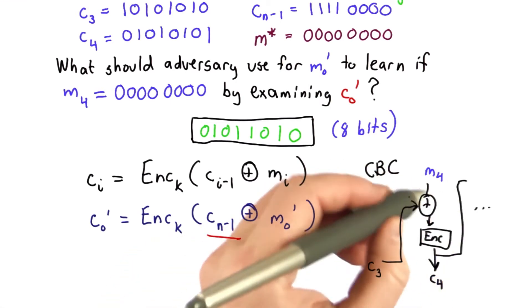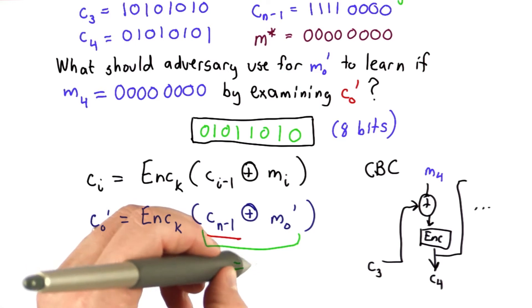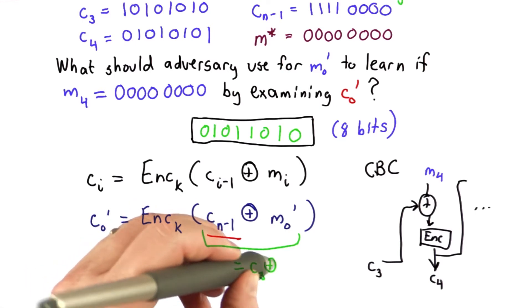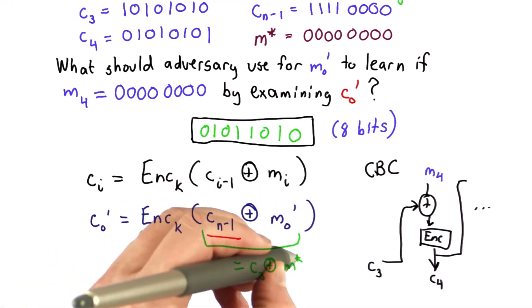So that means if we can feed in to this result, that means if we can make the value of this equal to the result of C3 xord with m4. We don't know m4, but we can make it our guess for m4. So we're going to xor it with our guess for m star, m4.